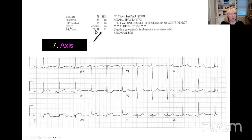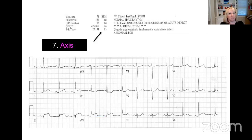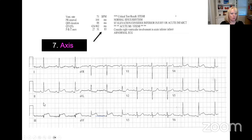Step seven is axis. There's a number here — it's 31. Axis is supposed to be zero to 90. Axis really isn't that important in the grand scheme of things. We use it in wide complex tachycardias and sometimes when we think someone has a PE — you'll see a rightward axis. But other than that, we're not using it a whole lot. We'll note it and see what's going on.